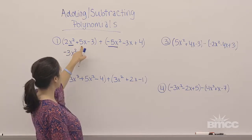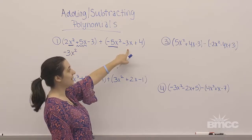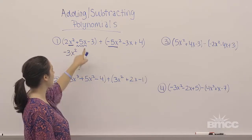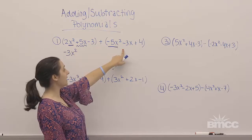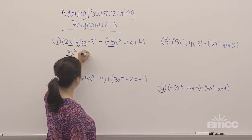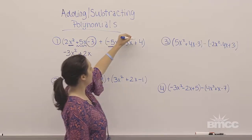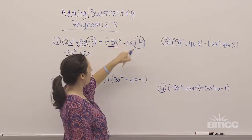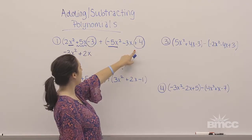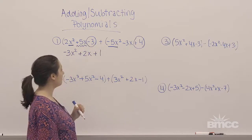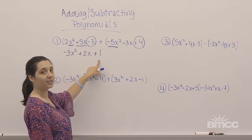Next I look at positive 5x. Positive 5x and negative 3x are like terms because they both have x raised to the first power, so positive 5 plus negative 3 is positive 2x. Then for the constant terms, negative 3 plus positive 4 is positive 1. So my final solution is negative 3x squared plus 2x plus 1.